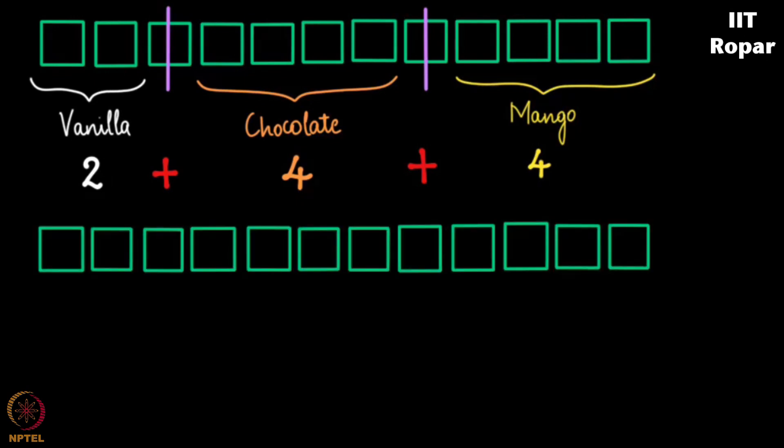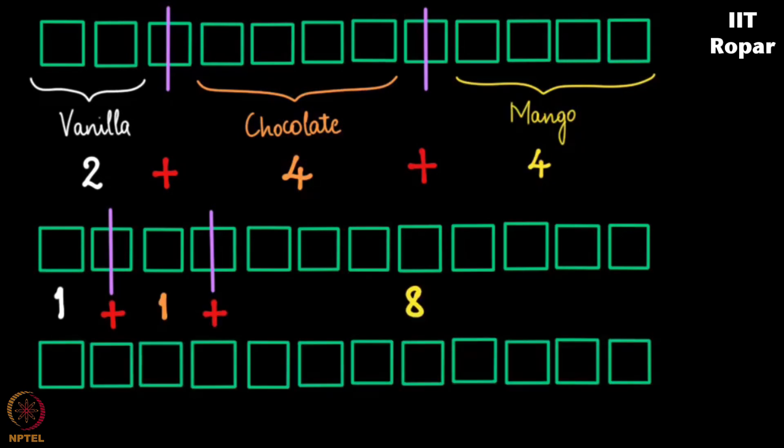Second possibility is putting a stick in the second slot and fourth slot. And finally this last thing, where he sells all vanilla, is putting the sticks in the last two slots, denoting that between the first stick and the second stick there is nothing, which means he doesn't sell any chocolate flavored ice creams. And after the last stick there is empty space, which means he doesn't sell any mango flavored ice creams.